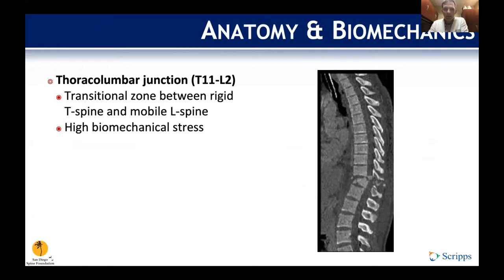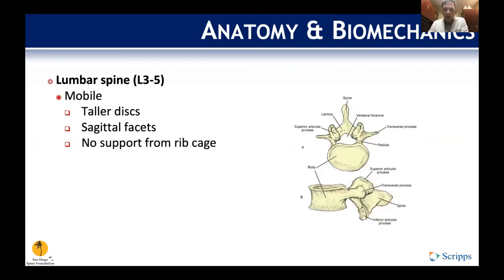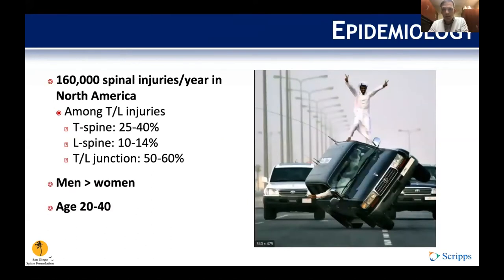Further down in the lumbar spine it's more mobile. The facets change orientation and are more sagittal. You don't have the support of the rib cage, which makes it less rigid but also gives you a lot of the flexibility.